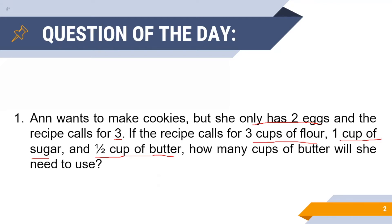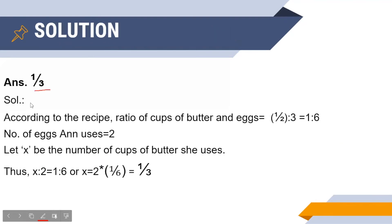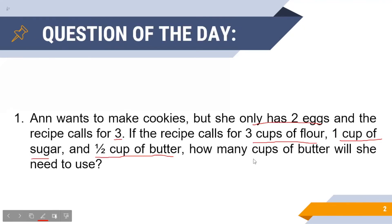Now before we go on to the detailed solution, let us take a quick glance at the correct answer. As you can see, the correct answer is 1/3, or Anne needs to use one-third cup of butter to make the cookies.